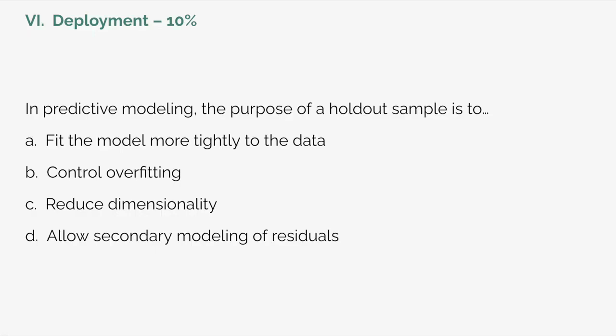Now onto our second to last topic, Deployment. In these questions, you'll be asked about putting machine learning models into production. Deployment makes predictions available to users so they can make data-driven business decisions. This topic is 10% of the content on the CAP. Here's a sample question: In predictive modeling, the purpose of a holdout sample is to: A) Fit the model more tightly to the data; B) Control overfitting; C) Reduce dimensionality; or D) Allow secondary modeling of residuals. The answer is option B. The available dataset is typically split into training data and holdout data, and the holdout data is where the model is applied and assessed. This technique allows you to control for certain machine learning models that would otherwise overfit or memorize the underlying data.